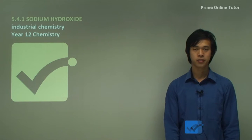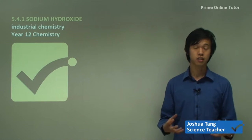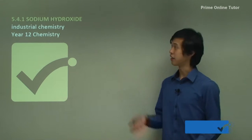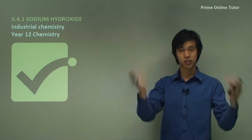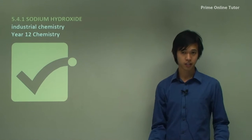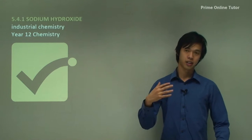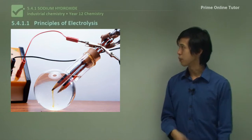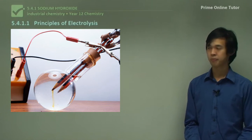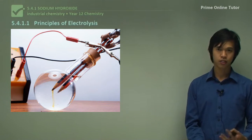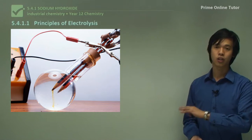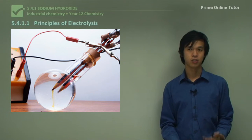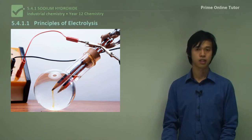Hello everyone, welcome again. Today's lesson will be on industrial chemistry, the option topic. This series will be on the sodium hydroxide section of the syllabus. Sodium hydroxide is a very important industrial chemical, and we'll talk about how we produce it in industry. Today's lesson will focus on the principles of electrolysis, simply because the production of sodium hydroxide requires knowledge of electrolysis. We're going to review it now so that you're well prepared to look at the reactions occurring in the sodium hydroxide processes.